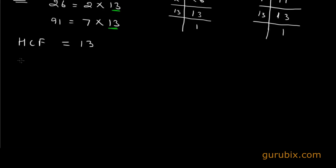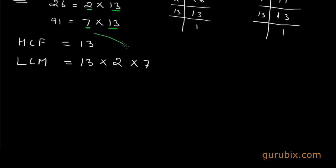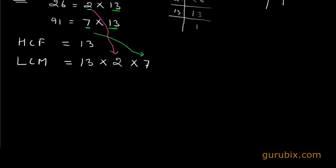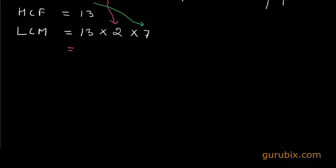How can we find the LCM of these two numbers? This is very easy. Write the highest common factor first, then write down the product of the remaining factors. 2 remains from 26 and 7 remains from 91, so we write 13 × 2 × 7.